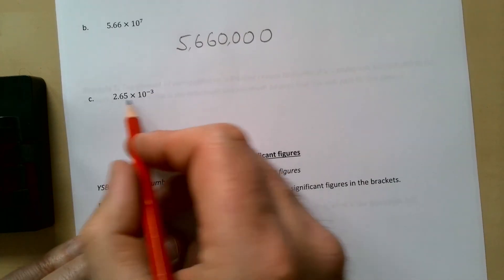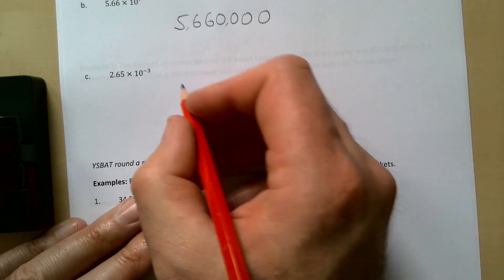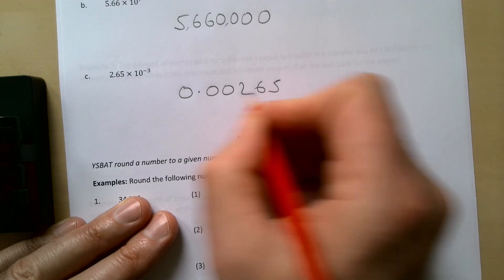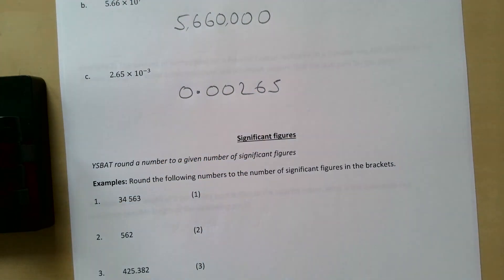For 2.65 × 10 to the power of -3, if it's a minus power, it's going to be moving down. So it's 0.00265 — that's 1, 2, 3 places. For another example with 10 to the power of -5, we move the decimal five places to the left.